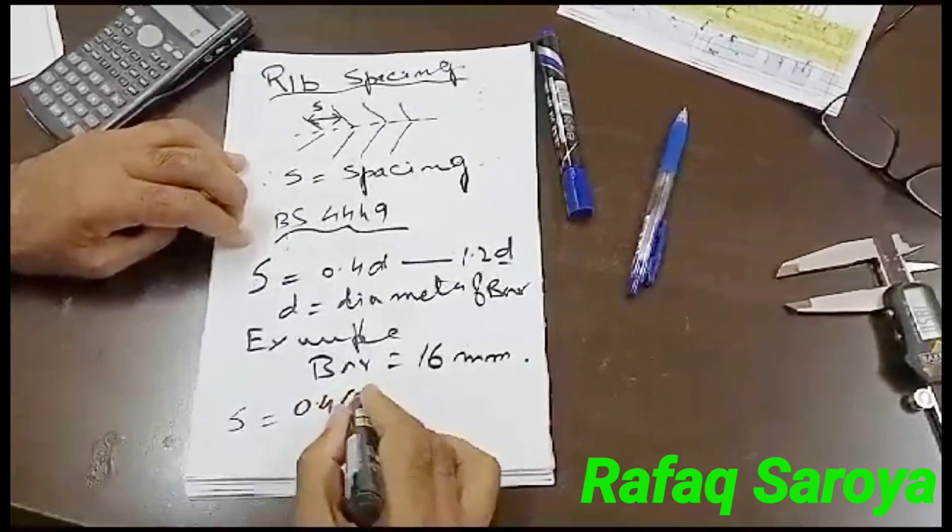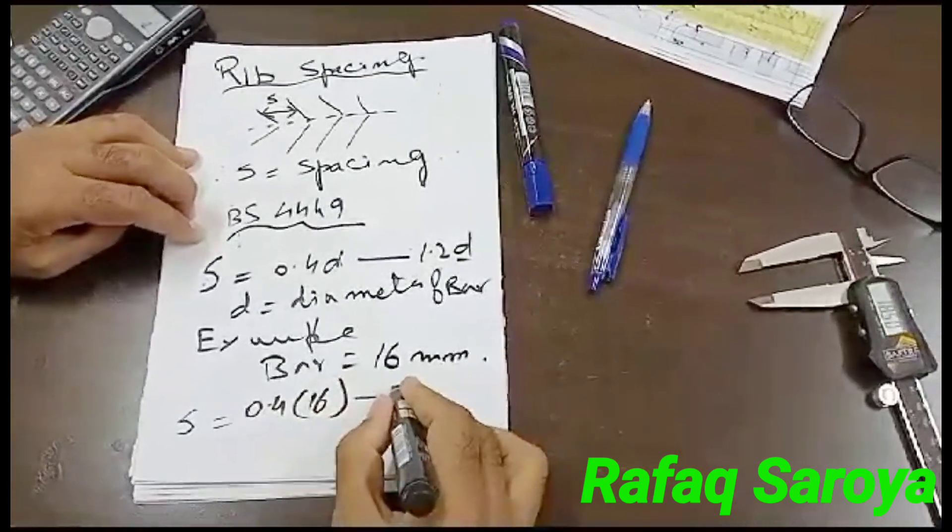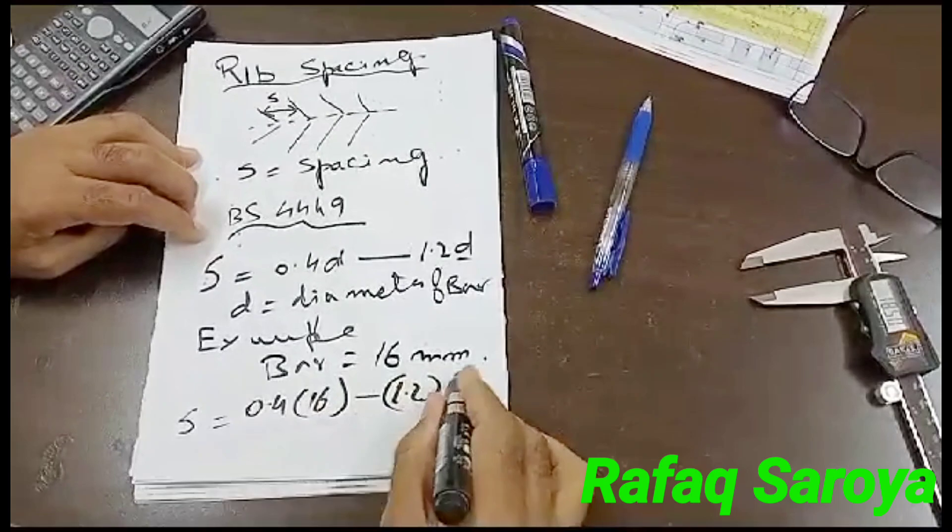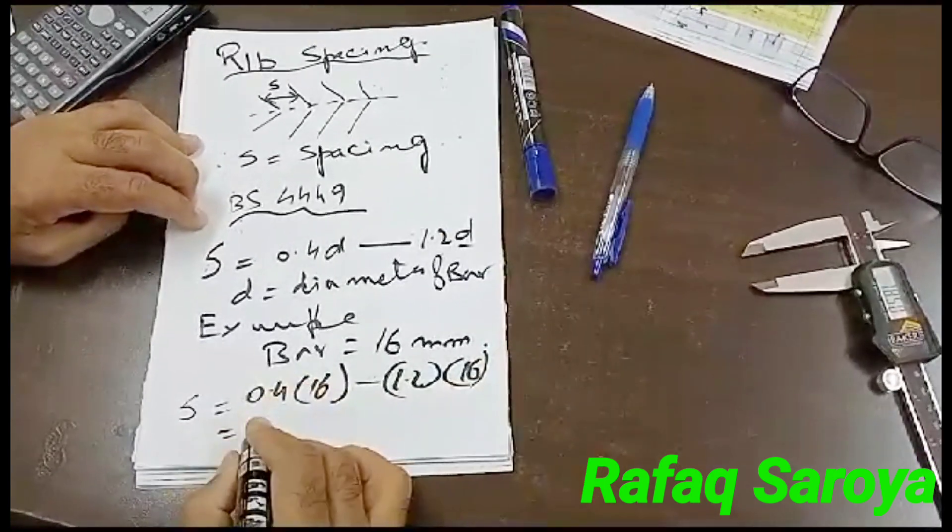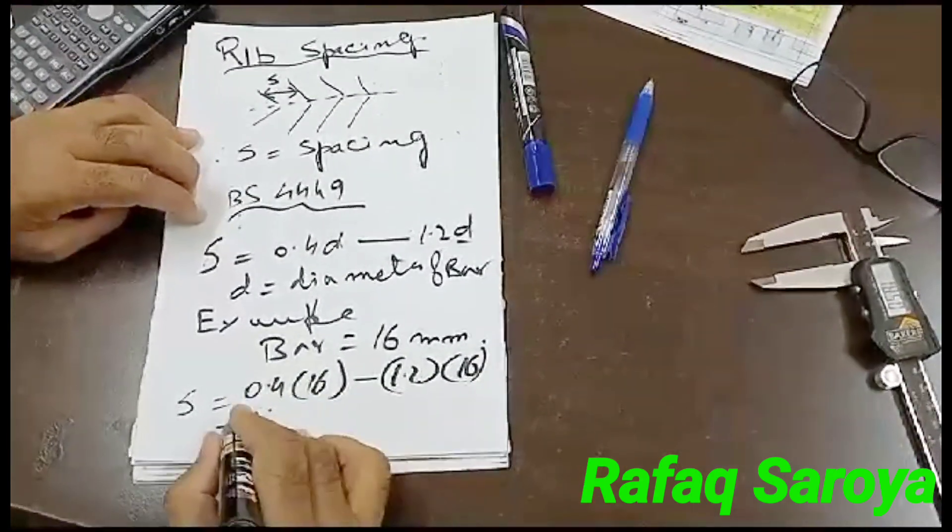0.4 into 16, 1.2 into 16. That gives us 6.4 and 19.2.